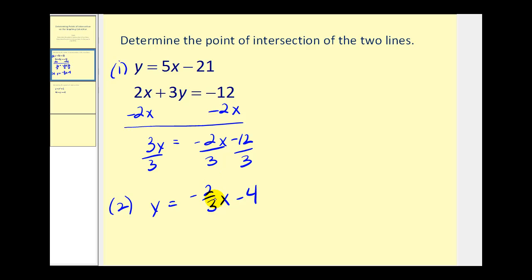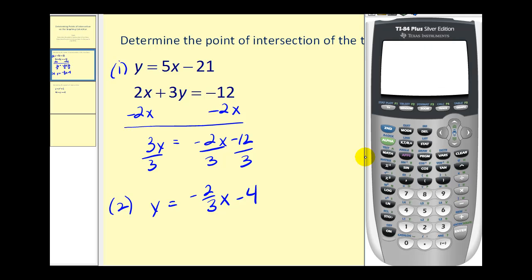Now these lines are in the form where we can enter them into the graphing calculator. Let's get our graphing calculators out. Press y equals. Y1 will equal 5x minus 21, and Y2 will equal negative 2/3x minus 4. We should put our fractional slope in a set of parentheses.